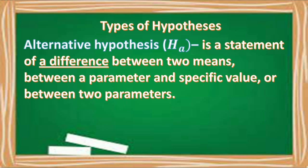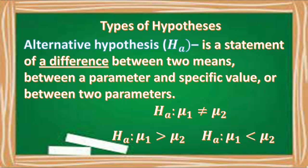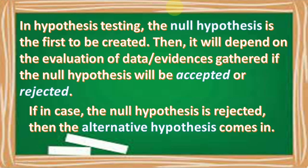The second one is the alternative hypothesis, denoted by Hₐ. It is a statement of a difference between two means, between a parameter and a specific value, or between two parameters — meaning two means are not equal, a parameter and a specific value are not equal, or two parameters are not equal. In symbol, we have μ₁ ≠ μ₂, or μ₁ > μ₂, or μ₁ < μ₂. In hypothesis testing, the null hypothesis is the first to be created, then it will depend on the evaluation of data or evidence gathered whether it will be accepted or rejected.